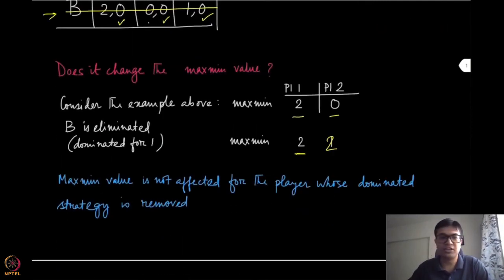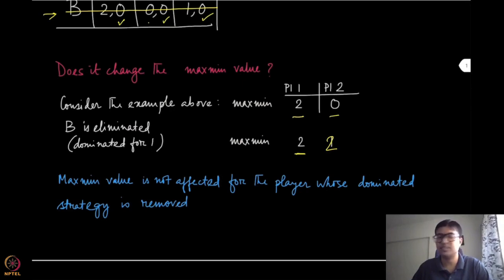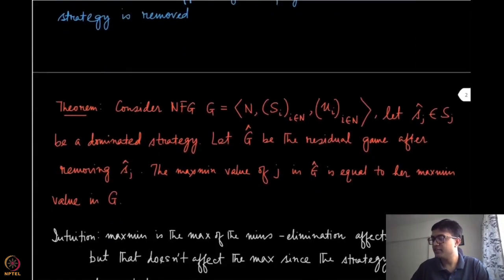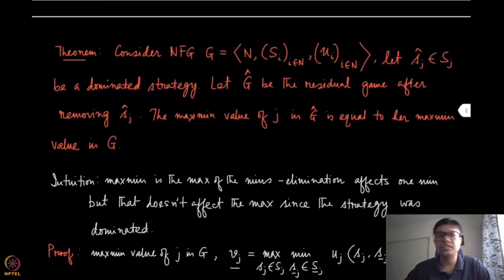The observation is: the maximin value is not affected for the player whose dominated strategy is removed. This is not just a coincidence — in fact, we can formally prove that for the player whose dominated strategy you are removing, her maximin value is not going to get changed.